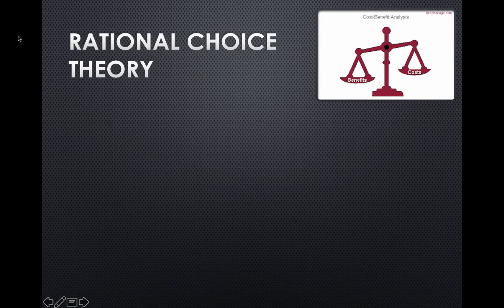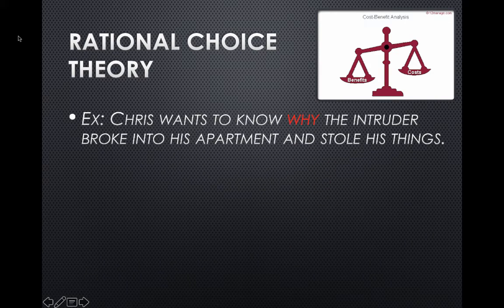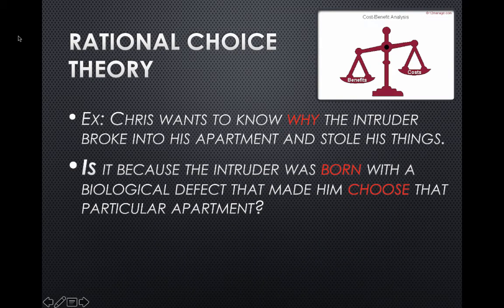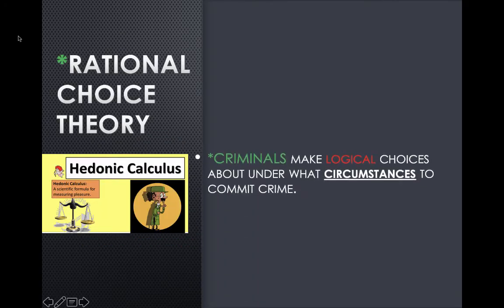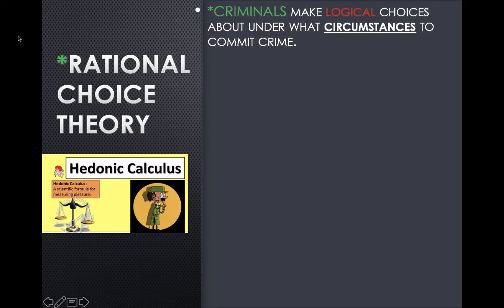Now the rational choice theory. An example: Chris wants to know why an intruder broke into his apartment and stole his things — Chris was a victim of burglary. Rational choice theory asks: was it because the intruder was born with a biological defect? Or was it something in the intruder's upbringing that made him a criminal? Rational choice theory says criminals weren't born that way and weren't brought up that way — criminals just make logical choices about under what circumstances to commit crime.